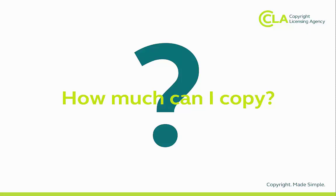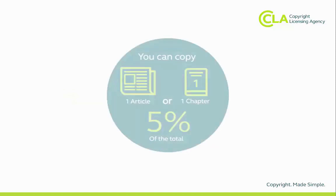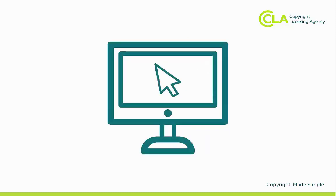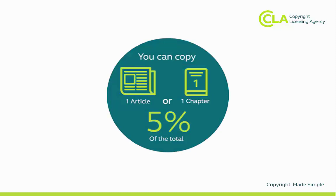The licence enables you to copy extracts from published material. For each purpose that requires a copy to be made, you can copy a single chapter from a book, a single article of a magazine or journal, or up to 5% of the publication, whichever is the greater. For website content that isn't structured in the same way as traditional print publications, copied extracts should, as far as is practical, be equivalent to the guide that you can see on screen.